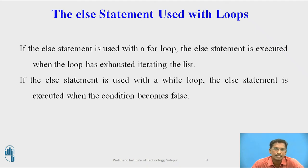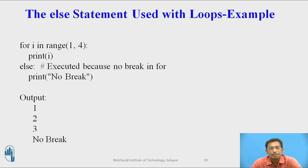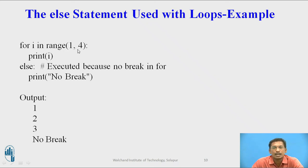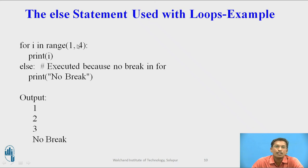Here is an example: for i in range(1, 4), print i, else print 'no break'. So the output is 1, 2, 3, and 'no break'. The for loop starts with value 1 and ends with value 3 — 4 is exclusive. So the for loop prints 1, 2, 3. When the value of i becomes 4, it comes out of the for loop and executes the else part, which prints 'no break'. So the output of this program is 1, 2, 3, and no break.